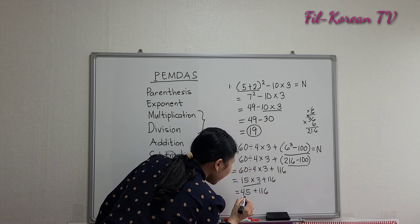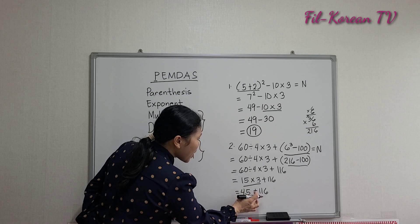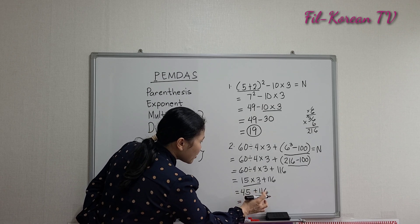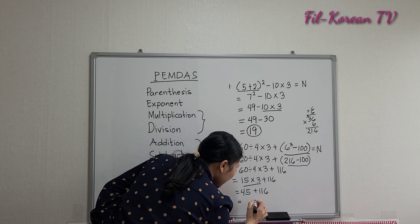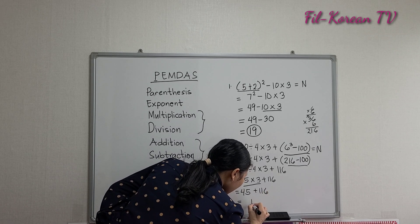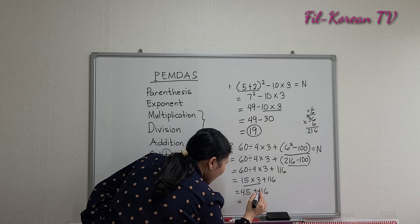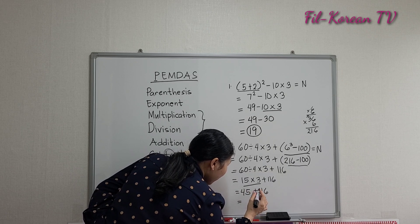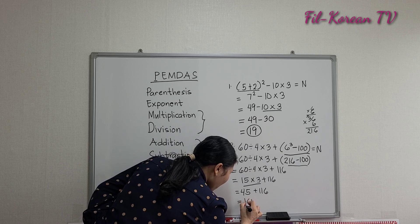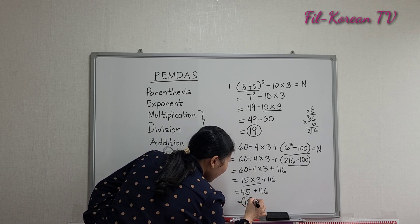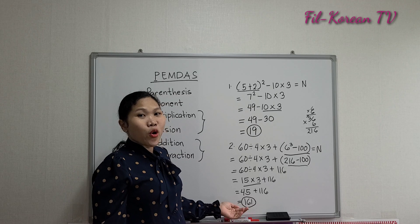For the final answer, we add 45 plus 116. 5 plus 6 is 11, carry 1. 4 plus 1, 5 plus 1 is 6, then bring down 1. So the final answer is 161. It is easy to get the correct answer if we just follow the rule.